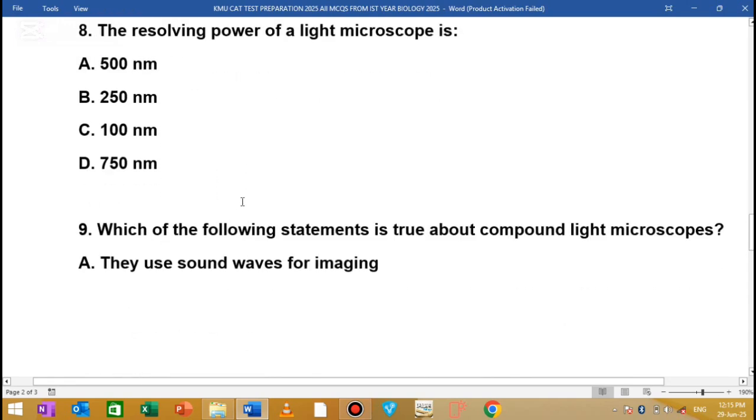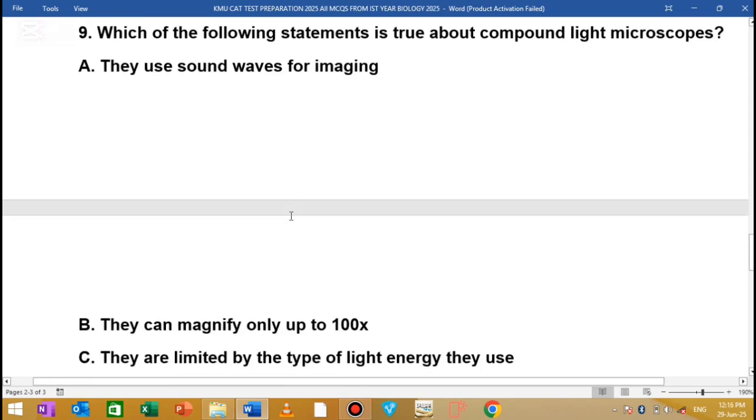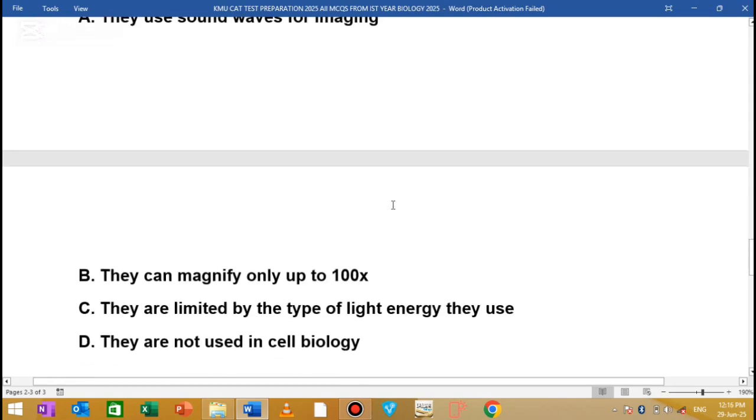MCQ number 8: The resolving power of a light microscope is 250 nanometers. MCQ number 9: Which statement is true about the light compound microscope? The compound light microscope can magnify only up to 100x. They are limited by the type of light energy they use.